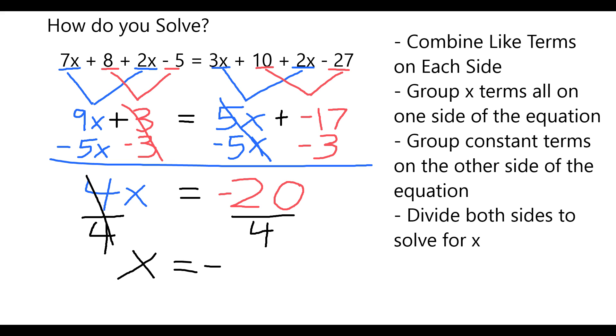And on the other side, negative 20 divided by 4 is equal to negative 5. Therefore, for my original equation to be true, x must equal negative 5.